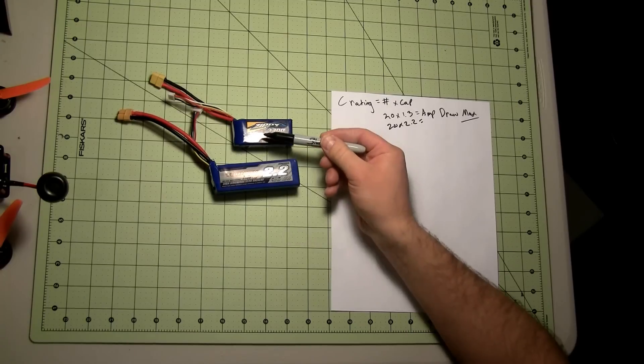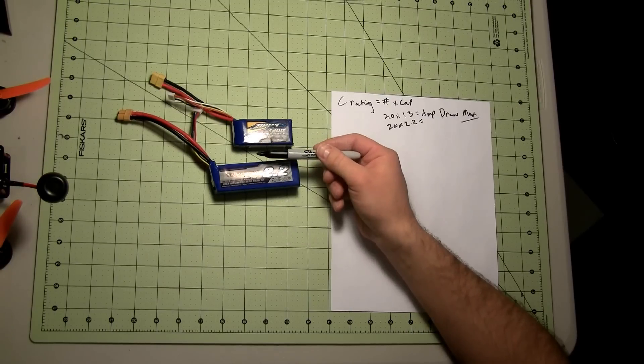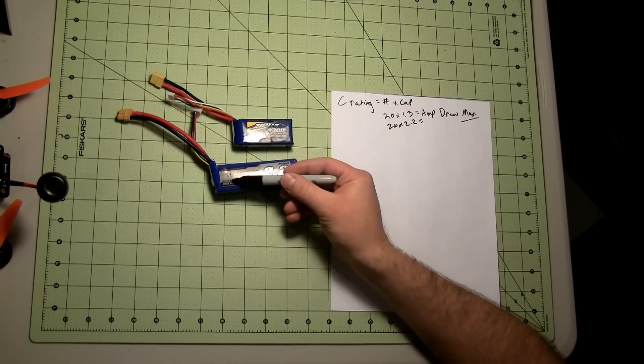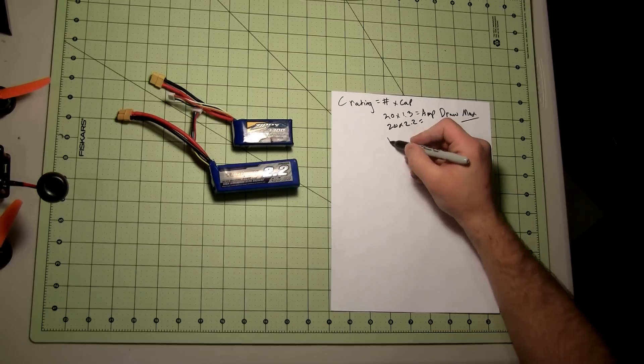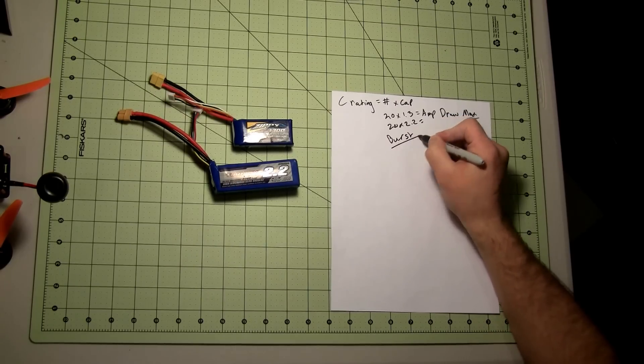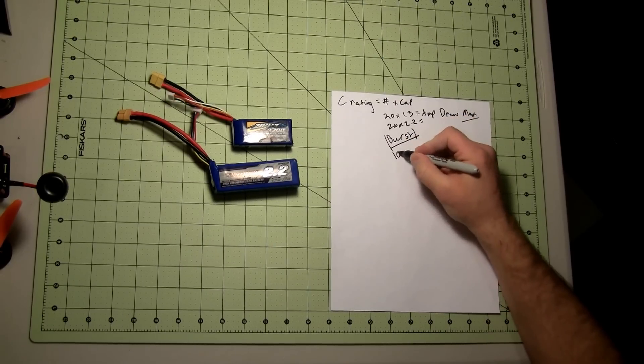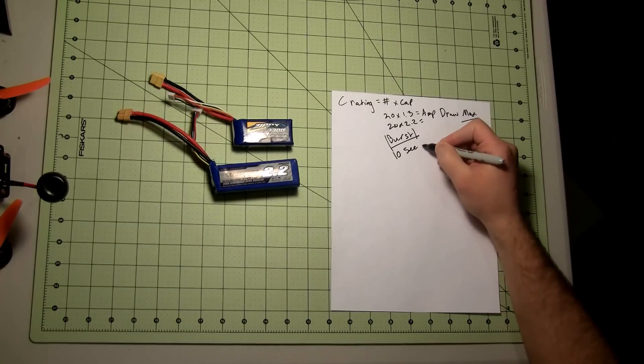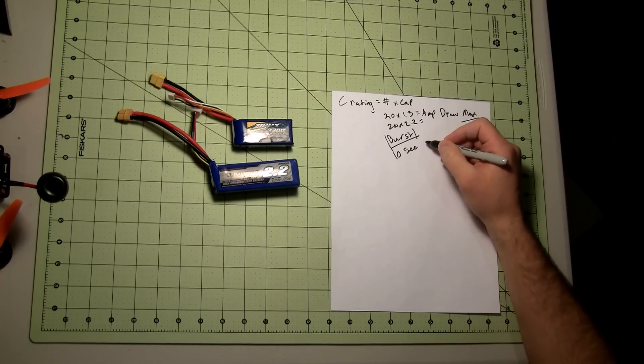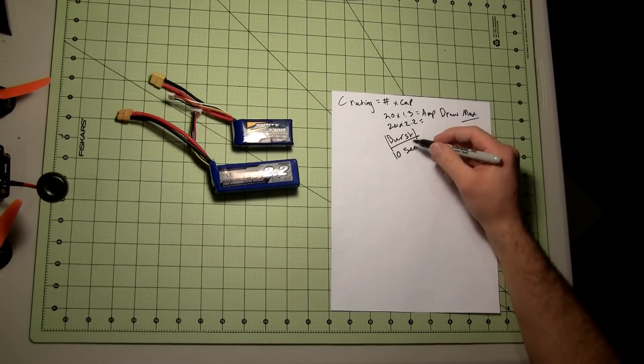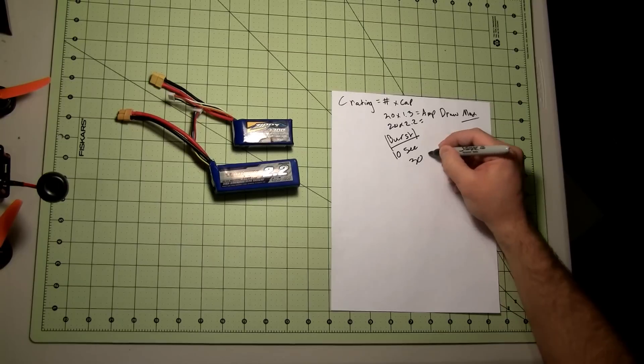Now if you notice this one, they all say basically 10 more C gives you the burst. So it's 20 to 30C because they all have a burst mode. And what that is, is about 10 seconds of extra power.